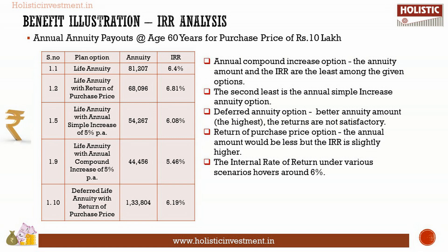The second least is the annual simple increase annuity option. Under the deferred annuity option, though you get a better annuity amount — the highest — the returns are not satisfactory. Under the return of purchase price option, the annual amount would be less, but the IRR is slightly higher. The internal rate of return under various scenarios hovers around 6%. IRR analysis shows that in the long run, investing in annuity plans will lock your money.